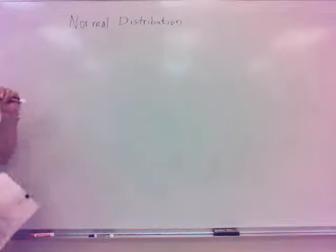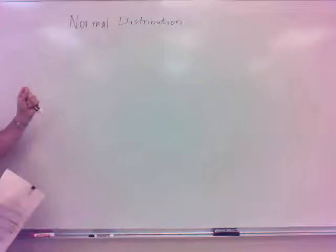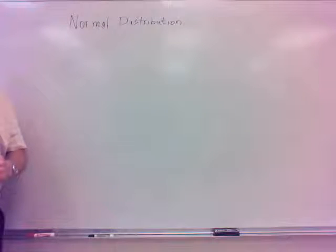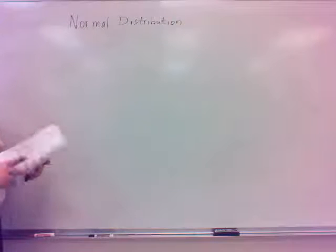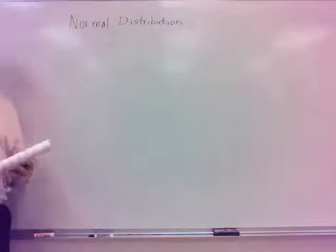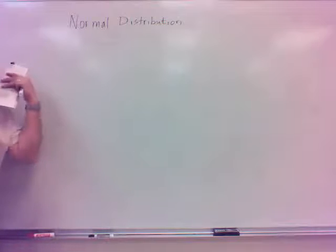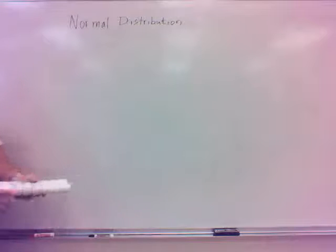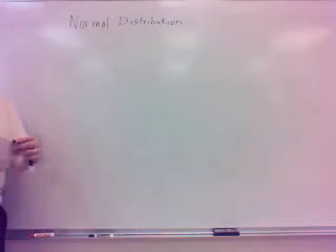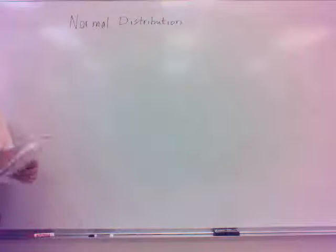Well, the normal distribution is a special type of distribution, and it occurs naturally, I guess one way we could say it. It just occurs a lot in statistics, in life. As far as distributions go, it's one of the most frequently occurring type of distributions.